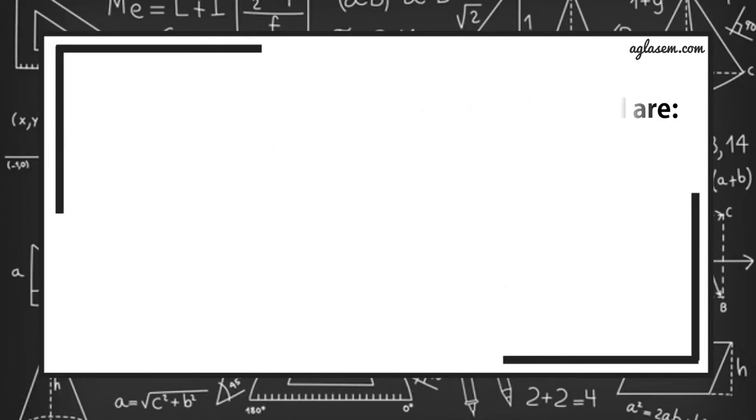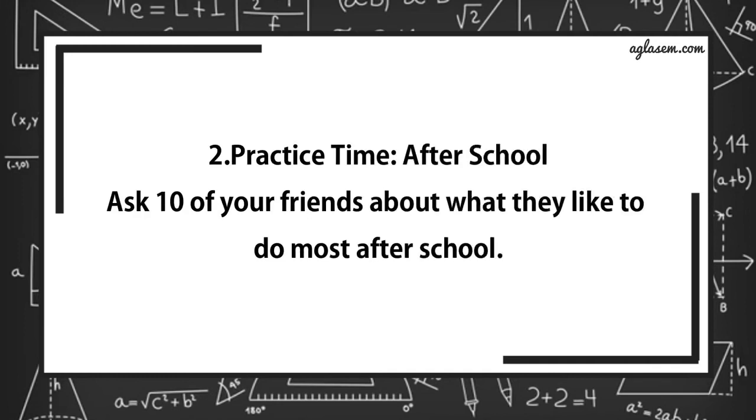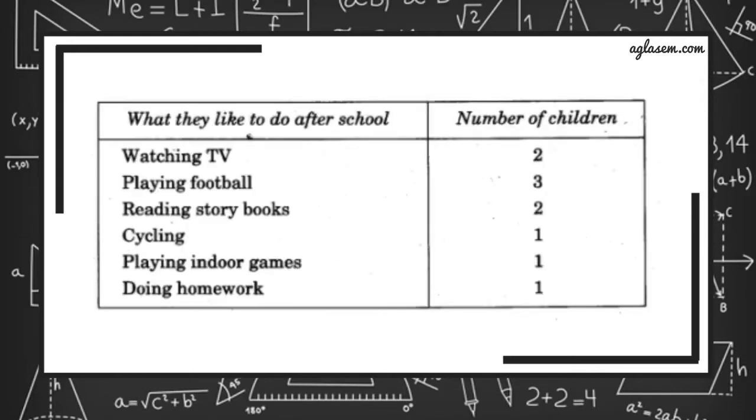Further, question 2, Practice time. After school. Ask 10 of your friends about what they like to do most after school. Here is a table. After school, most of the children prefer to watch TV, number 2. Playing football, 3 children. Reading story books, 2 children. Cycling, 1 child. Playing indoor games, 1 child. Doing homework, again, 1 child.